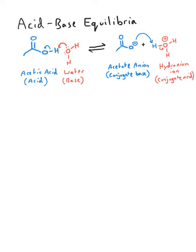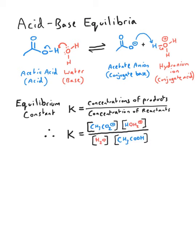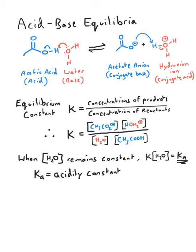To determine the equilibrium, we must calculate the equilibrium constant using this equation. Now, if we assume that the concentration of water remains constant, as this reaction is probably being run in water, we can now solve for the acidity constant, or Ka, as such.